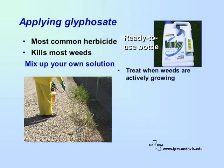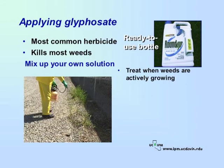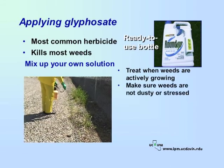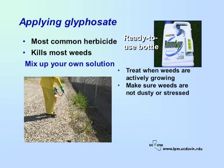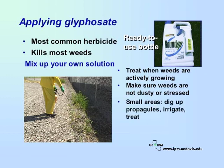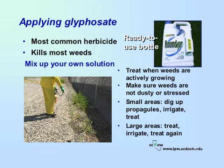Control perennial weeds when they are actively growing. Treatment will be more effective if weeds are not dusty or stressed for water. For small areas infested with perennial weeds, dig up the vegetative propagules, irrigate to encourage growth, and then treat when the new sprouts mature. For large areas, treat, irrigate, and then treat again after the new sprouts emerge.